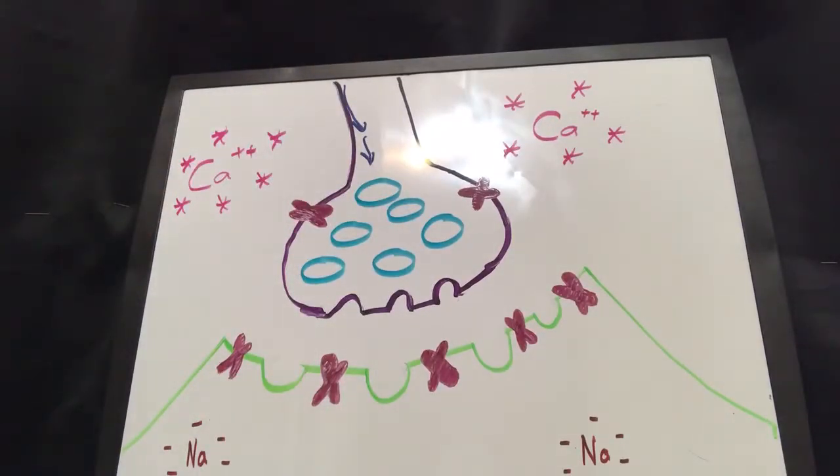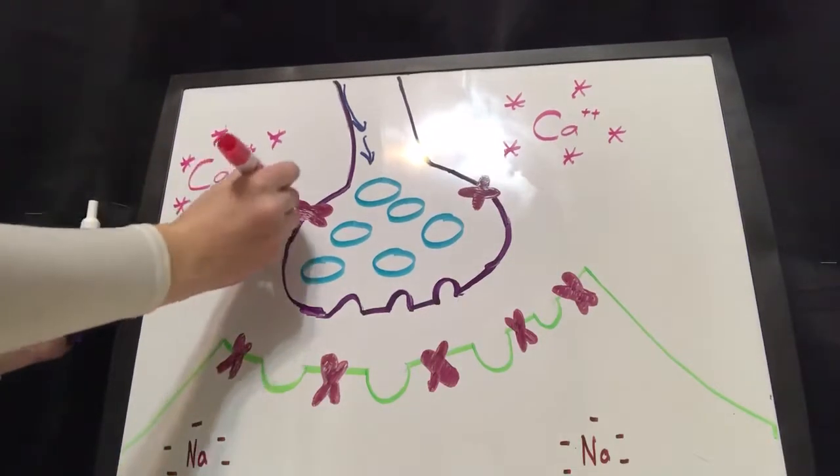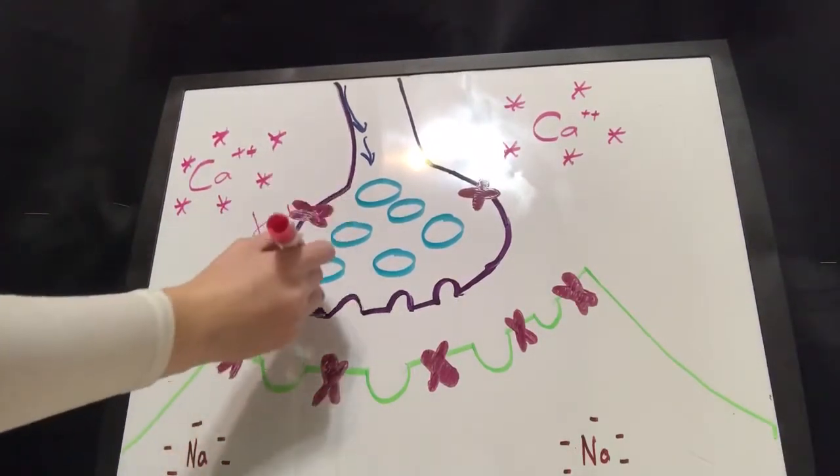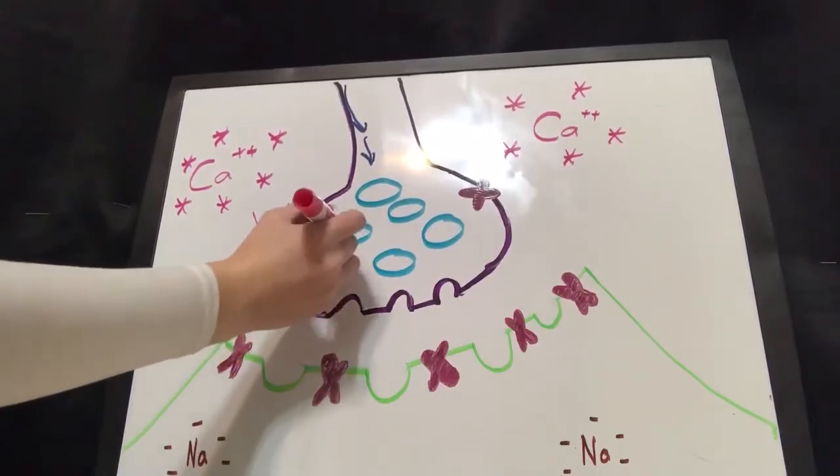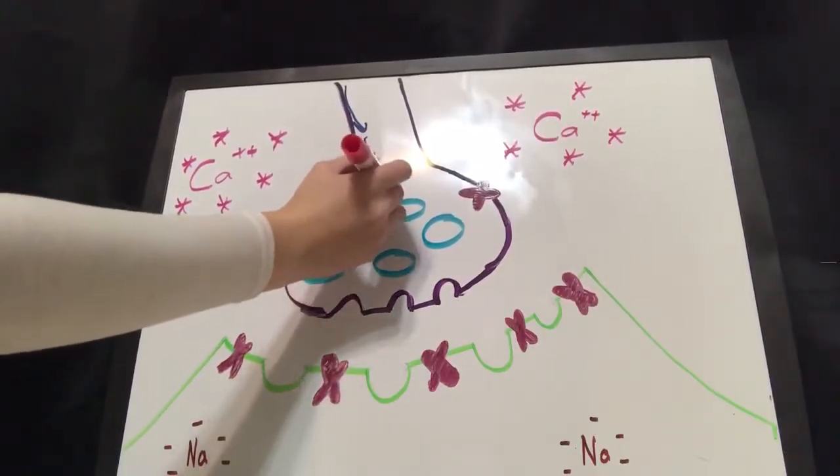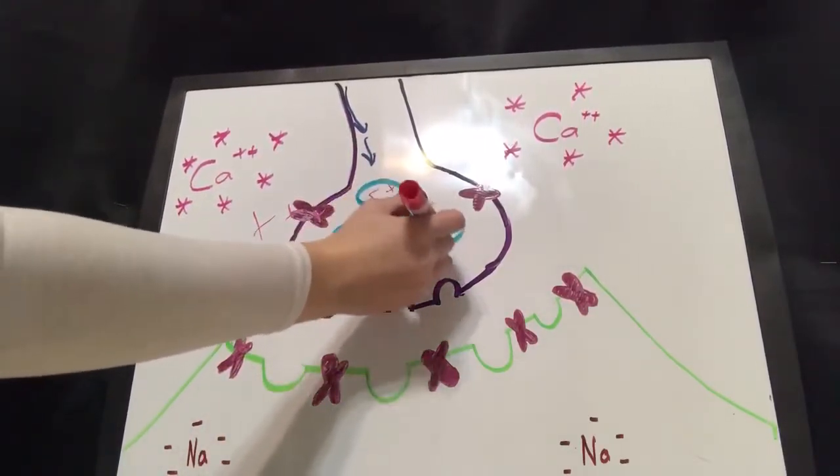And then the voltage-gated channels will open, causing the calcium ions to enter the synaptic end bulbs. So, it'll come in through right here, the gate, and it'll come in here in the bulbs, down in the end bulb, and go in the vesicles.